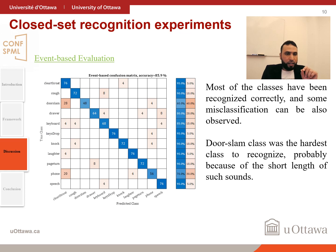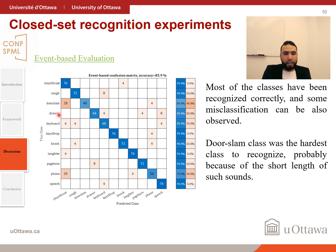For event-based evaluation of closed-set recognition, door slam also has misclassification — 28 percent of events are misclassified as clear throat. This causes the accuracy to reduce to 85 percent.